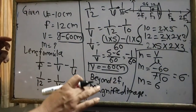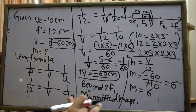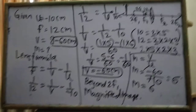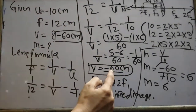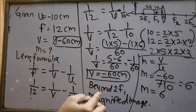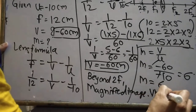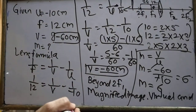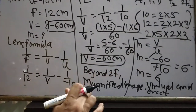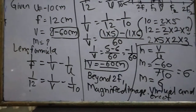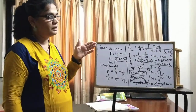The image is 60 cm on the left side, beyond 2F1 — a magnified image is formed. The negative sign indicates the image is virtual and erect. Nature of image: virtual and erect, magnified. The magnification is 6 times. Hope all of you understood the numericals based on the lens formula and power of lens.